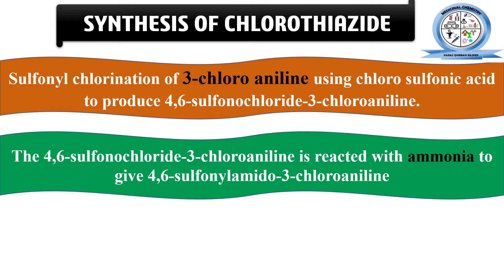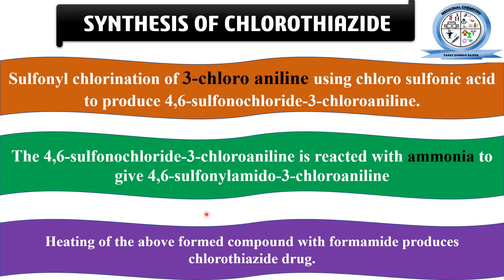In the next step, 4,6-disulfonyl chloride 3-chloroaniline is reacted with ammonia, so amidation occurs, and the resultant product is 4,6-sulfonamido 3-chloroaniline. After that, the product of the second step — 4,6-sulfonamido 3-chloroaniline — is reacted with formamide to produce chlorothiazide. This is the general theoretical overview of the synthesis; different routes exist but this is the simplest.